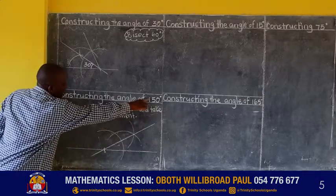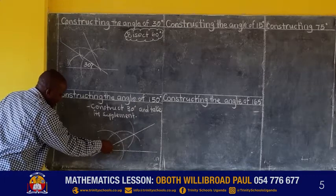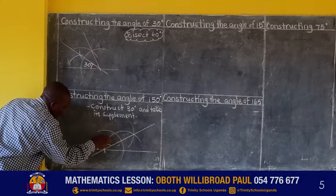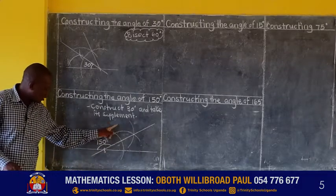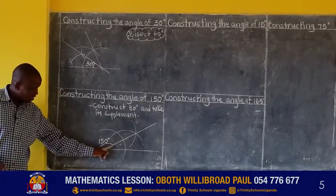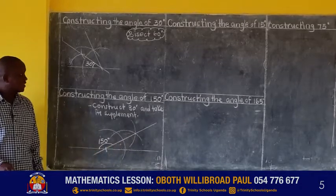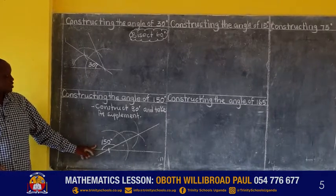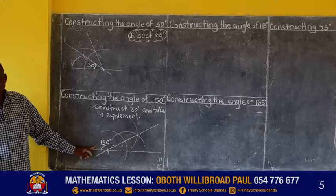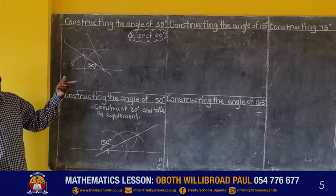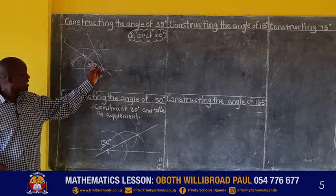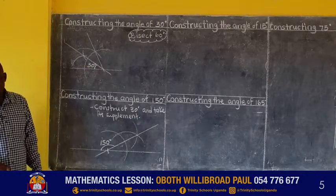We need 150 degrees. Do not indicate the 30, but indicate the required angle: 150 degrees. When you are showing your angle, it must start from that line going that side. So that is 150 degrees. When asked to construct 150 degrees, just ask yourself: what is the supplement of 150? The supplement of 150 is 30. Can I construct 30? Yes. You construct 30 and take the other side, which is not 30 — that will be your 150 degrees.